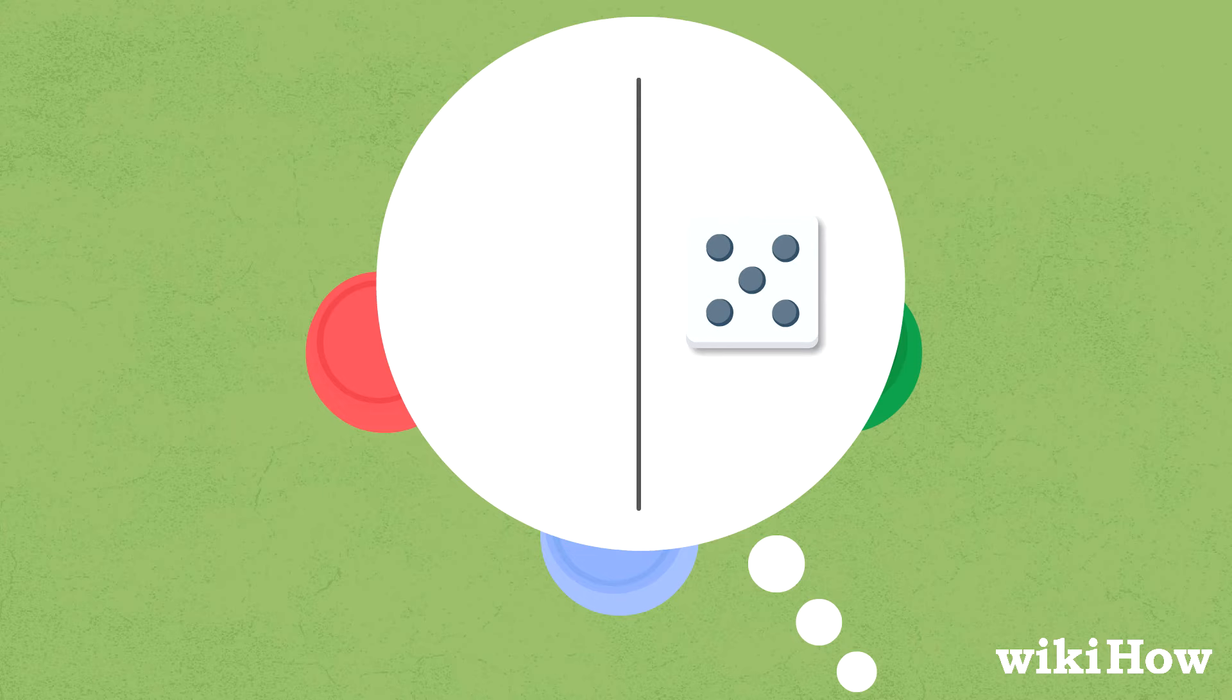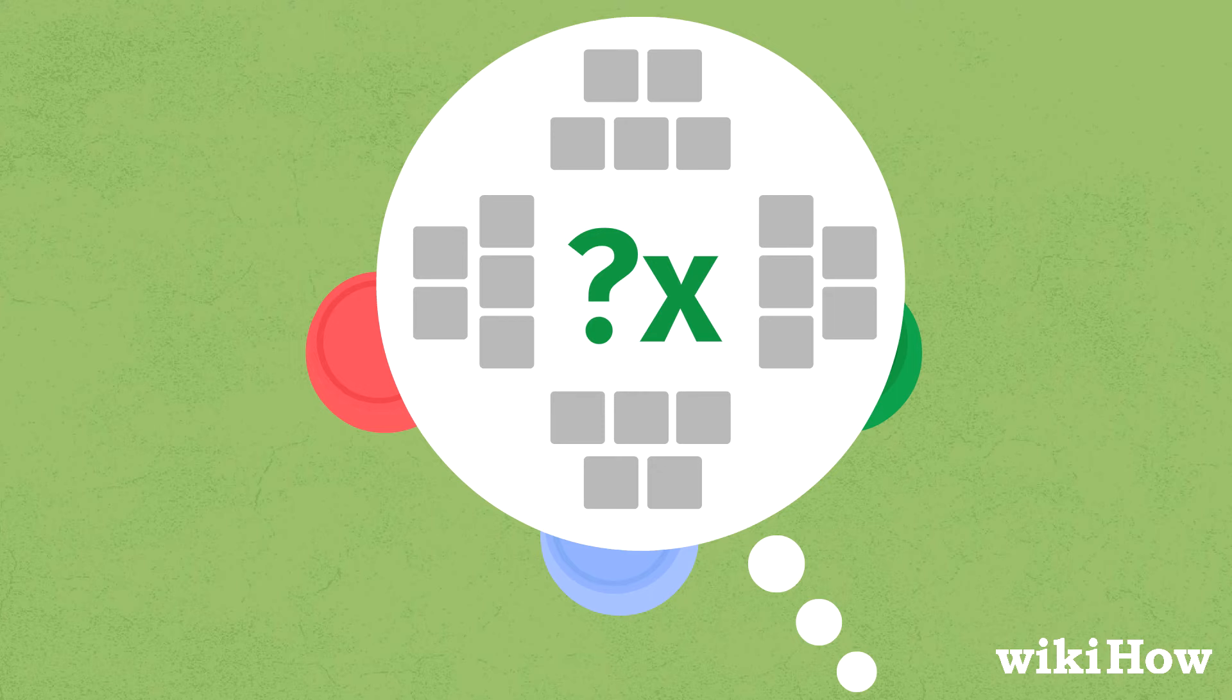The quantity is equal to how many of that face they think everyone at the table rolled. For example, they might bid seven fours.